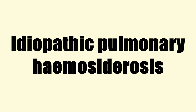Idiopathic pulmonary haemosiderosis is a lung disease of unknown cause that is characterized by alveolar capillary bleeding and accumulation of haemosiderin in the lungs. It is rare, with an incidence between 0.24 and 1.23 cases per million people.